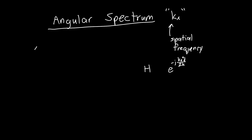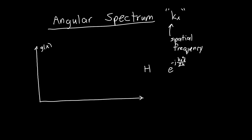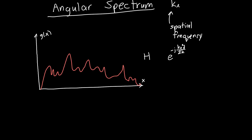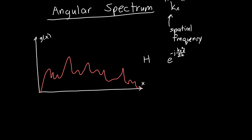Let's think first about some signal. Let's say this is a one-dimensional signal, and let's call this g of x, where x is our spatial coordinate. So g of x might look like anything—it might have a bunch of spikes in it, it might look like anything. But we know from Fourier's theorem, or from the Fourier transform, that we can build this signal out of a bunch of different sine waves of varying frequency.